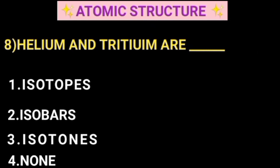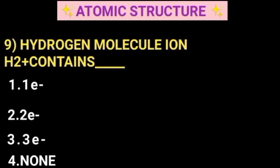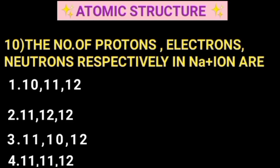Helium and tritium are each of the following. The most important question is covered. We will try to check out the record. Hydrogen molecule ion H2+ contains the number of electrons. The number of protons, electrons, neutrons respectively in Na+ ion. If you want to check out the complete orbit solution, you already have links in the description. Check out the structure. It is very important. You need to prepare it.